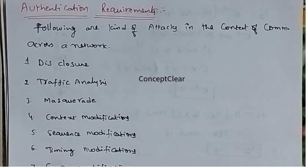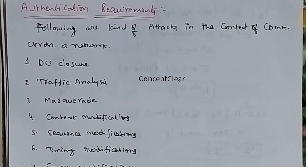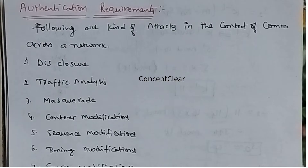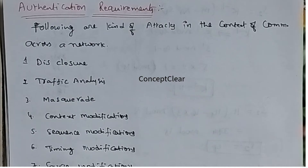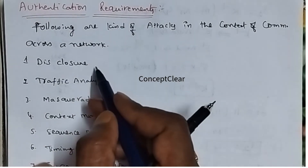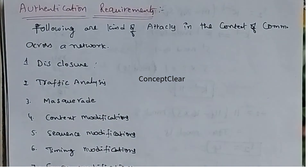The first one is disclosure. Disclosure is nothing but the release of the message contents to any person or process not possessing the appropriate cryptographic key. So it is the release of message contents to any person or process not crossing the appropriate cryptography key.